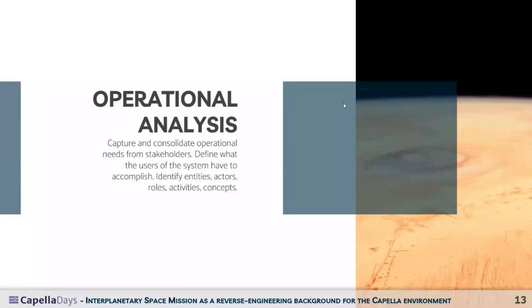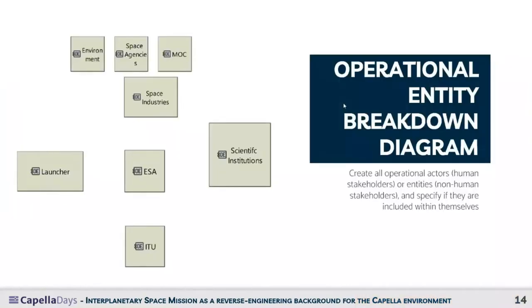The operational analysis aims at capturing and consolidating operational needs from stakeholders to define what users must accomplish and to identify entities, actors, roles, activities, and concepts. The first step is to create an operational entity breakdown diagram listing all actors and entities — both human and non-human stakeholders.